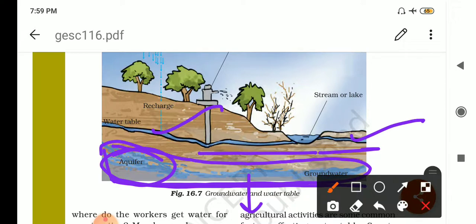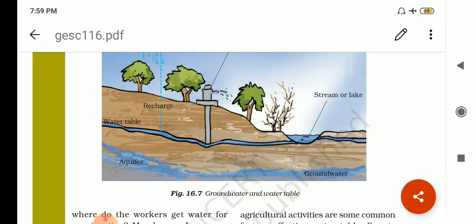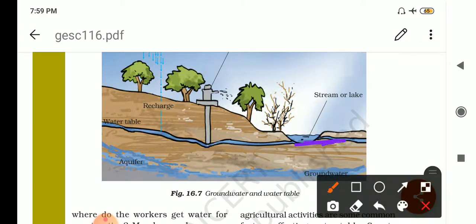Water table may be deep or shallow or may rise or fall depending on many factors. As you can see here, this is deep in comparison to this surface. Here it is forming the lake, water is also coming out, you know, making a lake here.